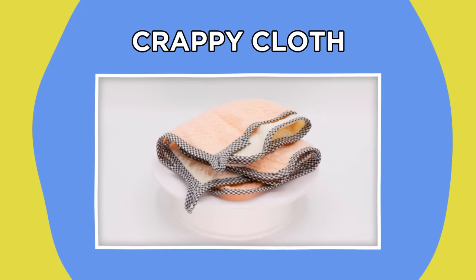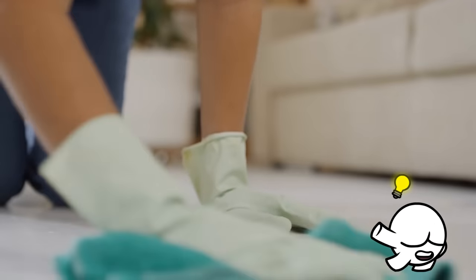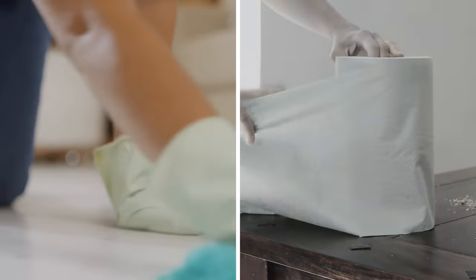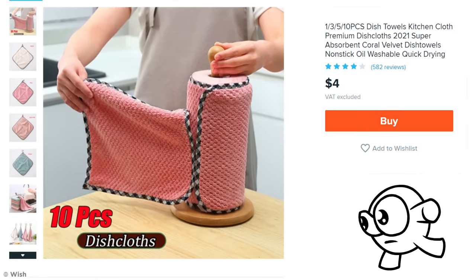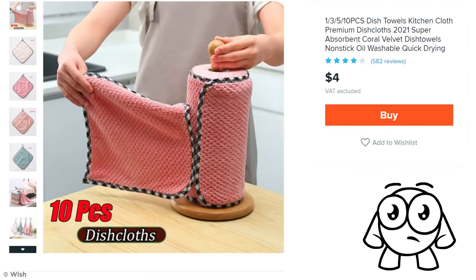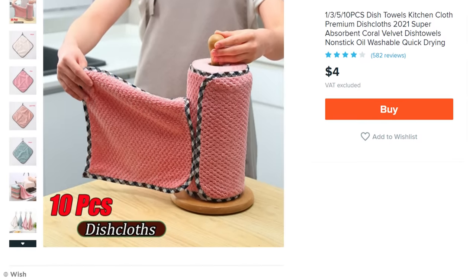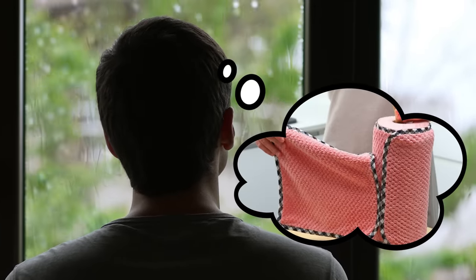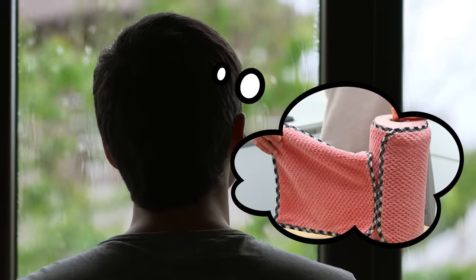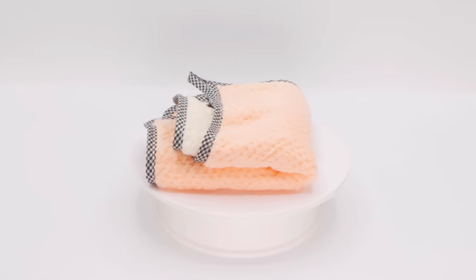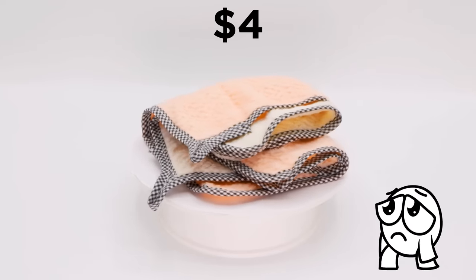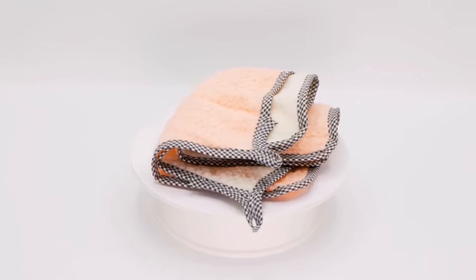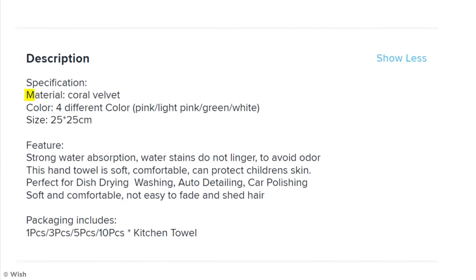Crappy Cloth. Microfiber cloths are a genius invention that replace the need for disposable paper towels. Which begs the question, why the heck is Wish selling an unholy love child of the two? I'm not even going to question it at this point. I'm just going to buy a roll of whatever this is for four dollars. I mean, I thought I was getting a roll from the picture, but what I actually got was this. It's just a single microfiber cloth that I bought for four whole dollars. I feel like an idiot.